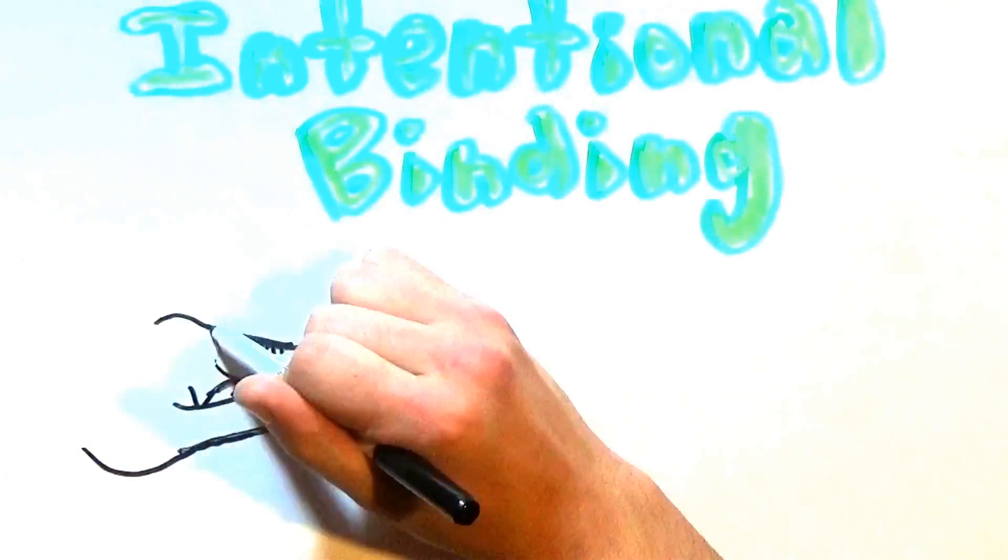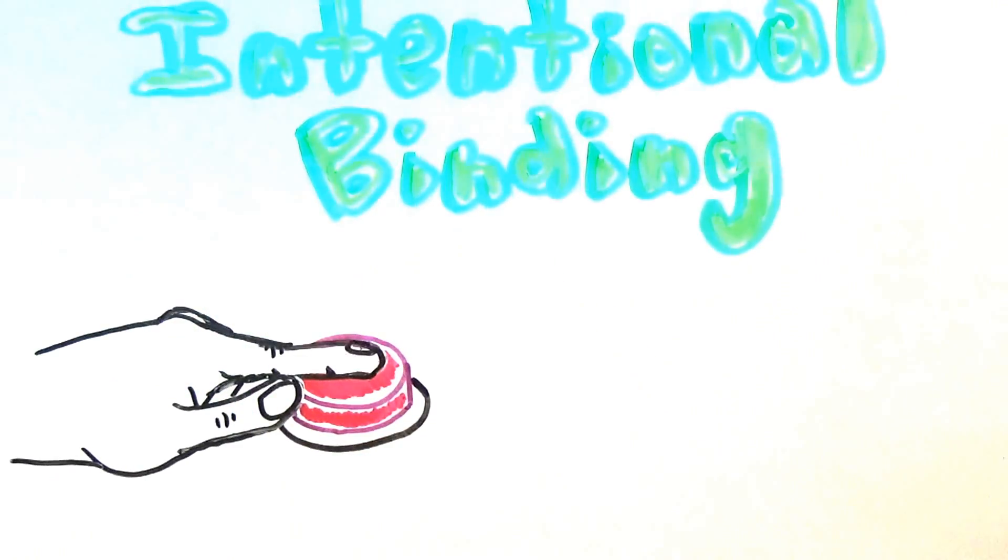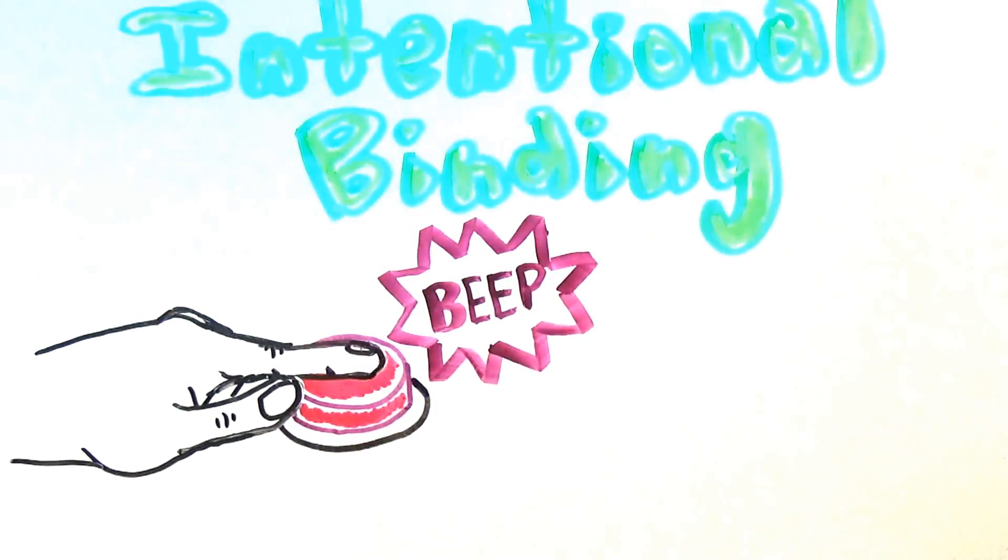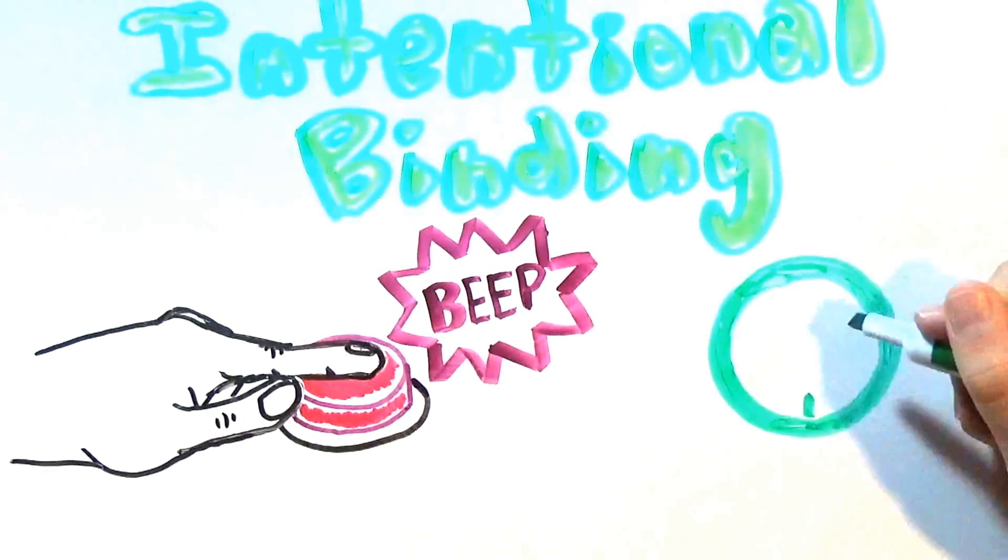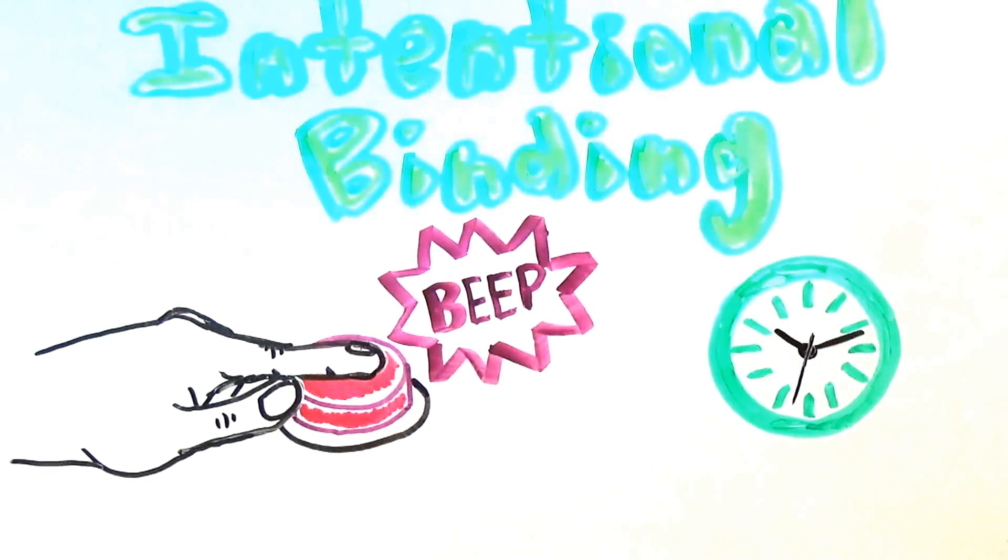With intentional binding, it has been found that the voluntary action and sensory response are perceived as being closer together in time than they really are, and it partly has to do with the brain's predictive motor mechanisms.